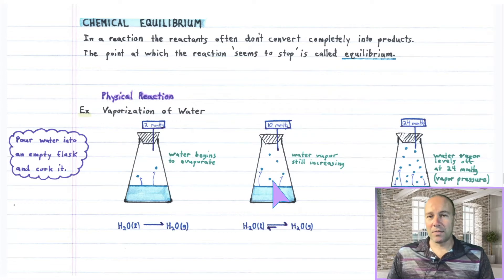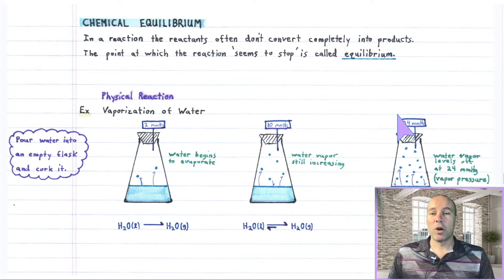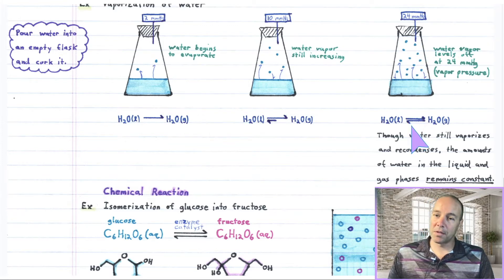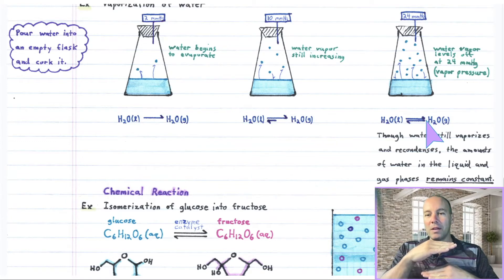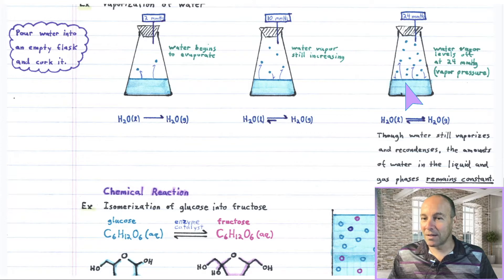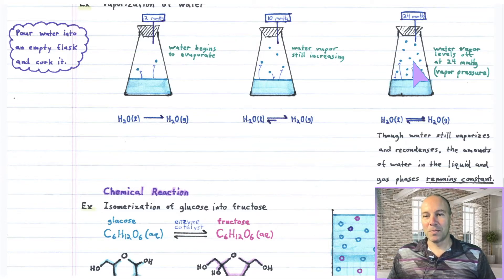The forward reaction rate is still going pretty steadily, and since there's not that much water vapor, not many molecules are recondensing. The reverse rate is small compared to the forward rate, so you continue to gain water vapor. If you wait a little while longer, you'll see the pressure level off at 24 millimeters of mercury and not increase after that. The reaction has reached equilibrium — the condensation rate matches the vaporization rate, and the amounts of water in both phases remain constant.